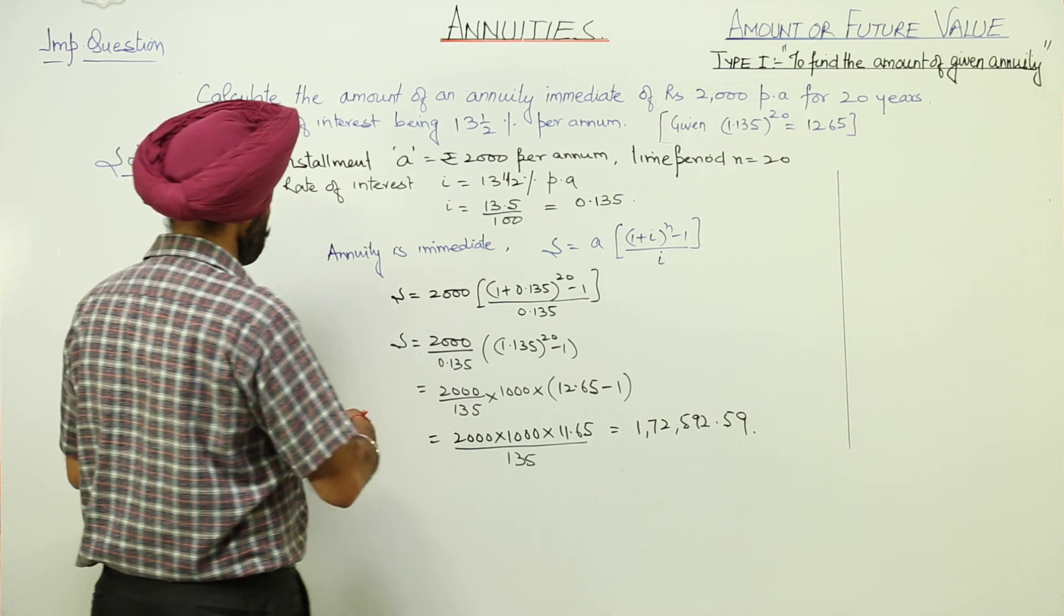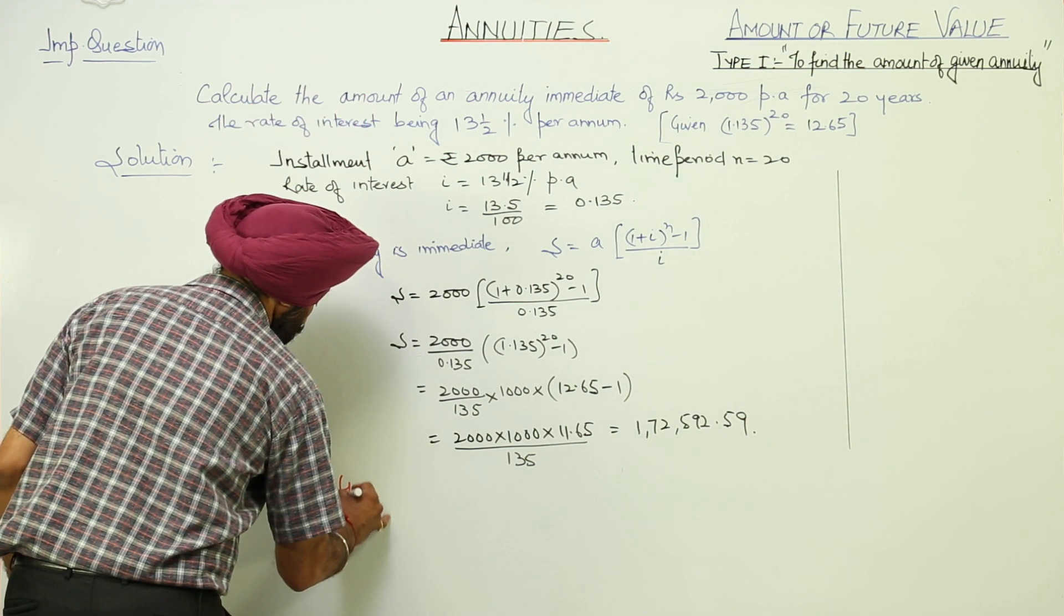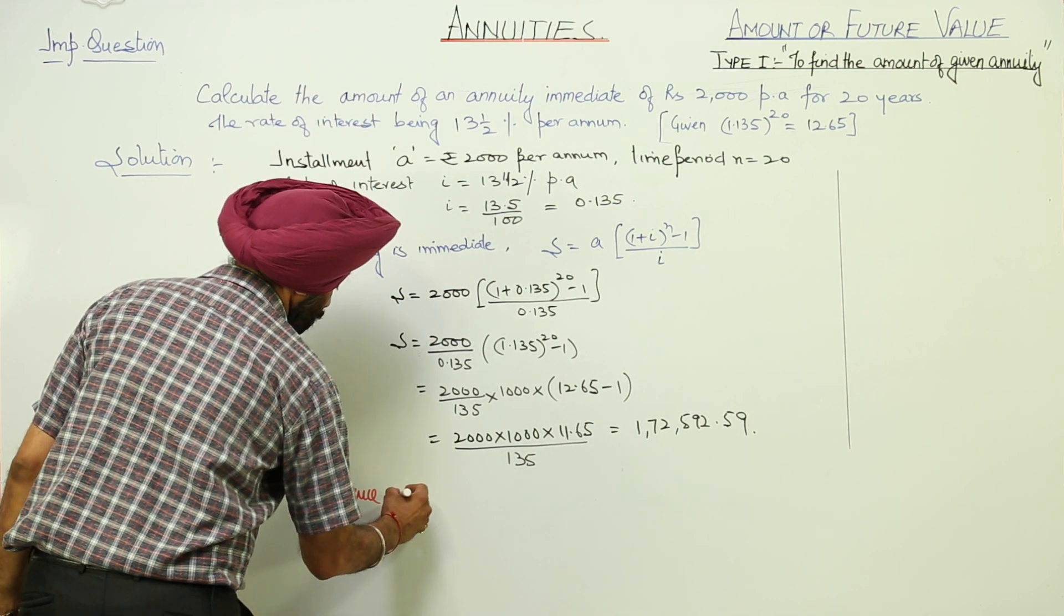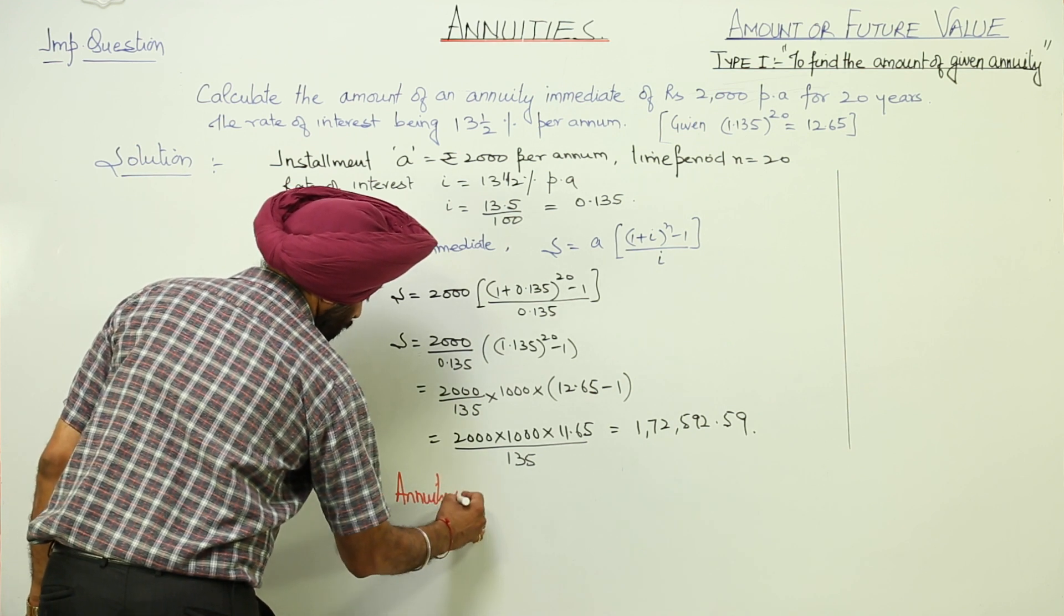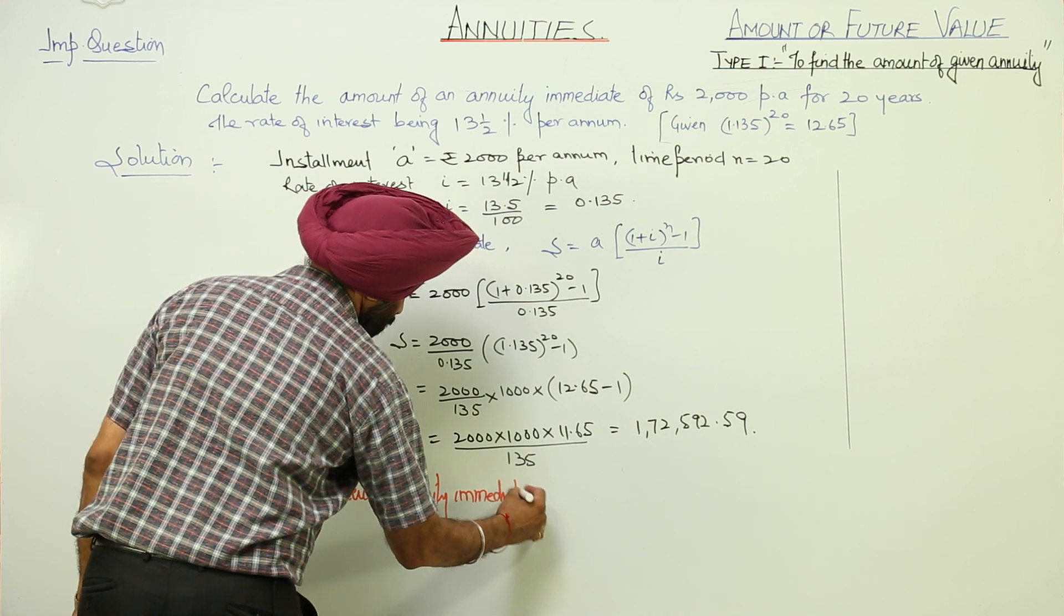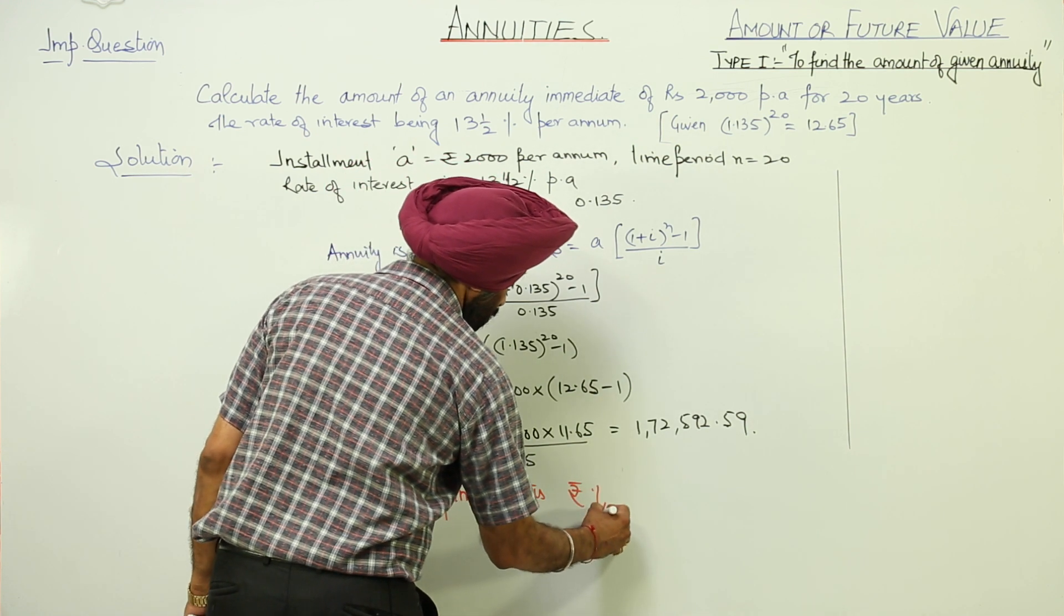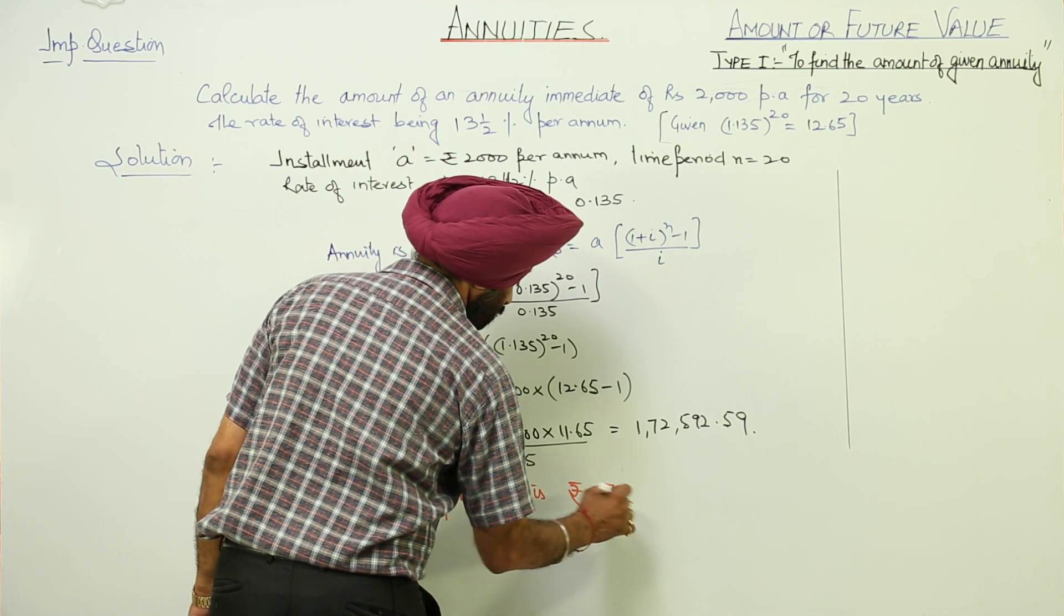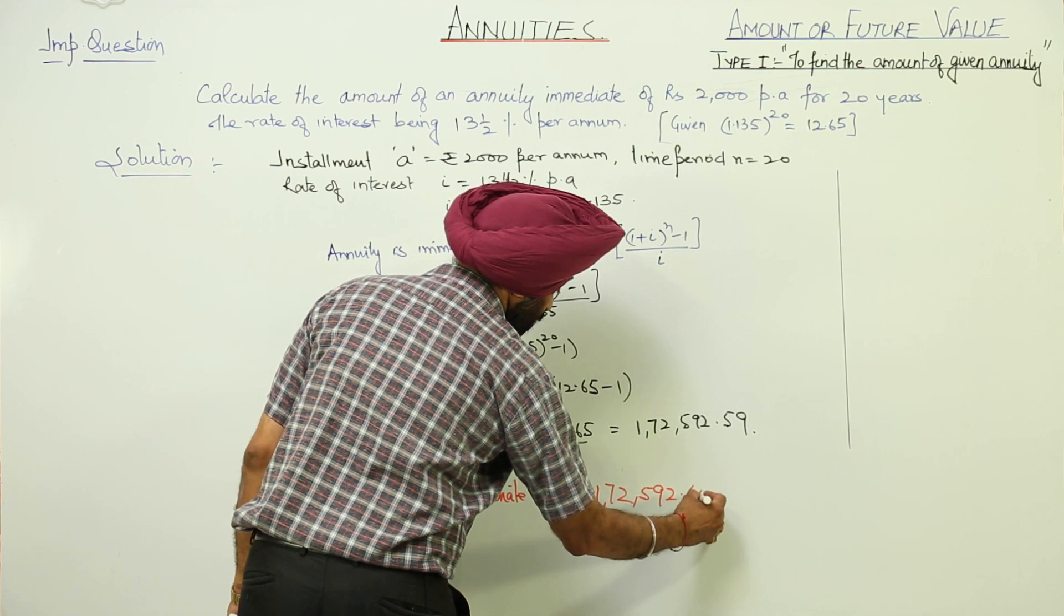This becomes... Hence, annuity immediate is rupees 172592.60.